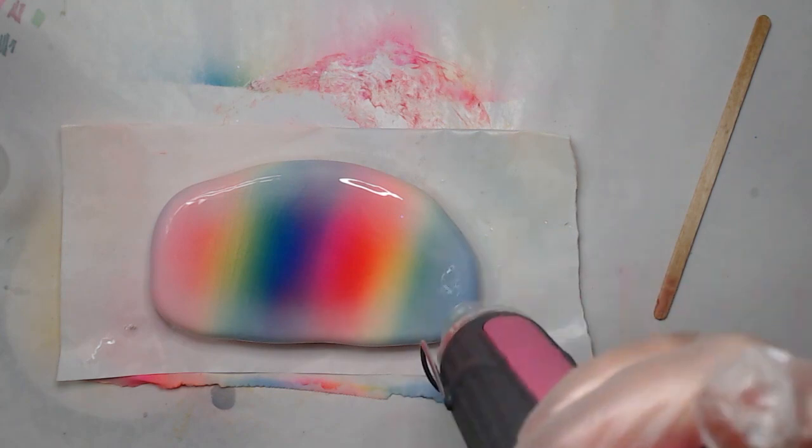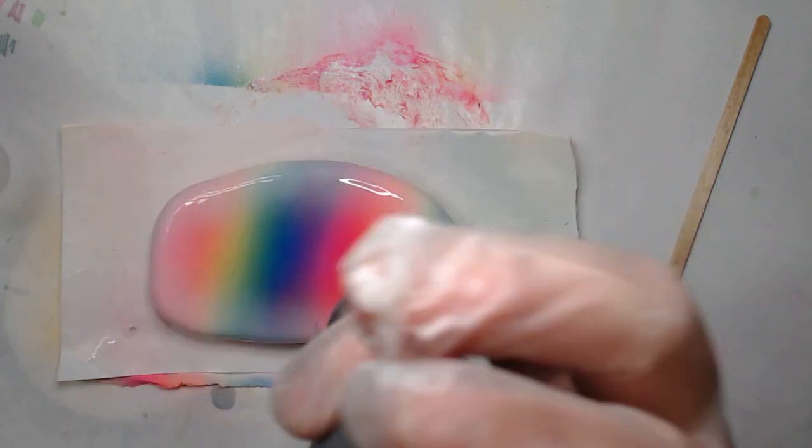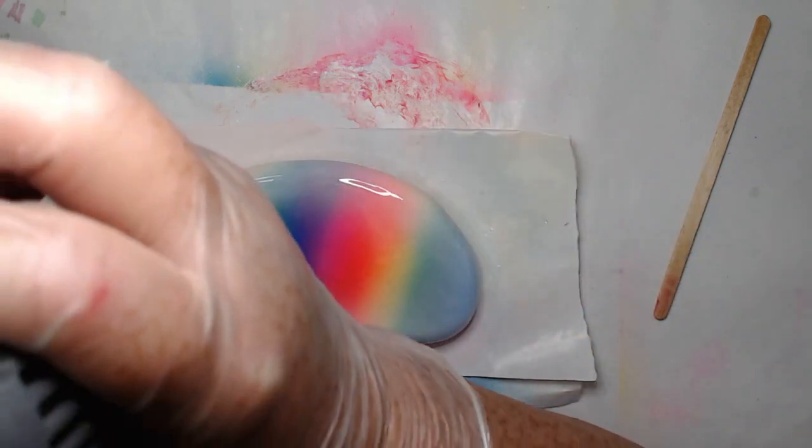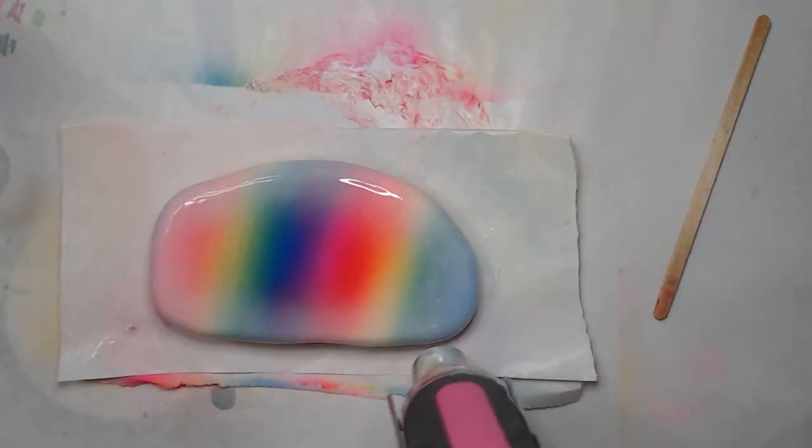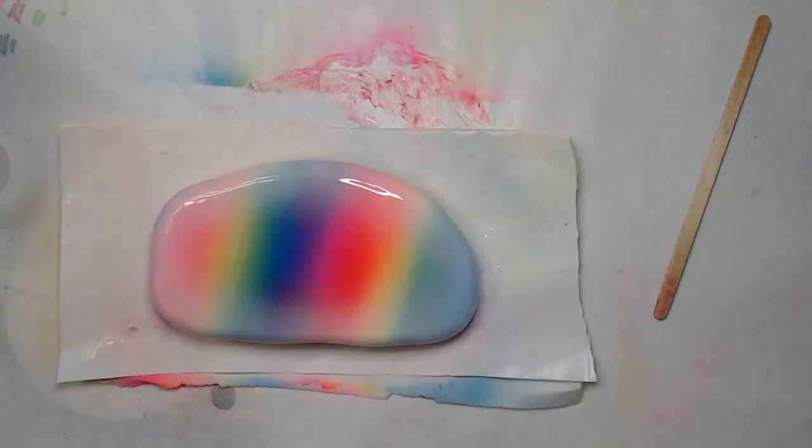Now that I have the epoxy covering my rock, I'm just taking a heat gun to smooth out the epoxy. Once you heat it up, it'll kind of self-level. So I'm just kind of speeding that process up by applying heat to it.